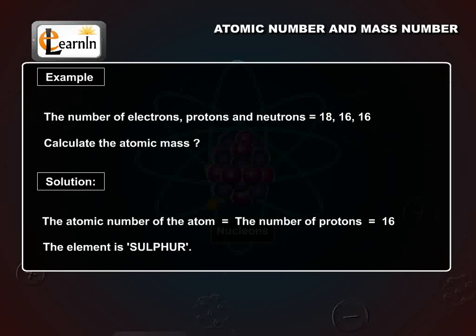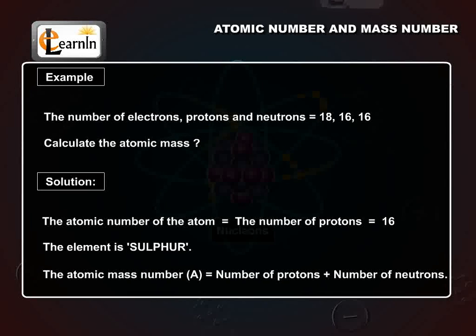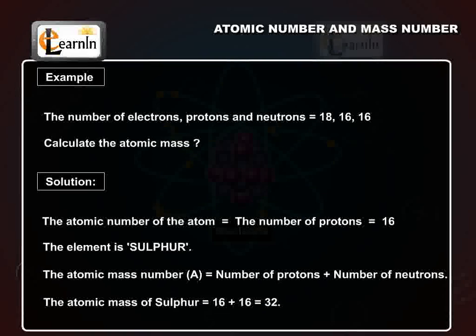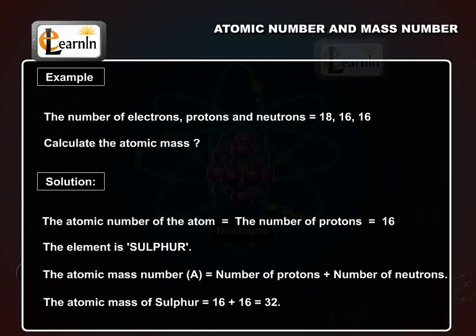We know that the atomic mass number, capital A, is equal to the number of protons plus the number of neutrons. Therefore, the atomic mass of sulfur is equal to 16 plus 16 is equal to 32.